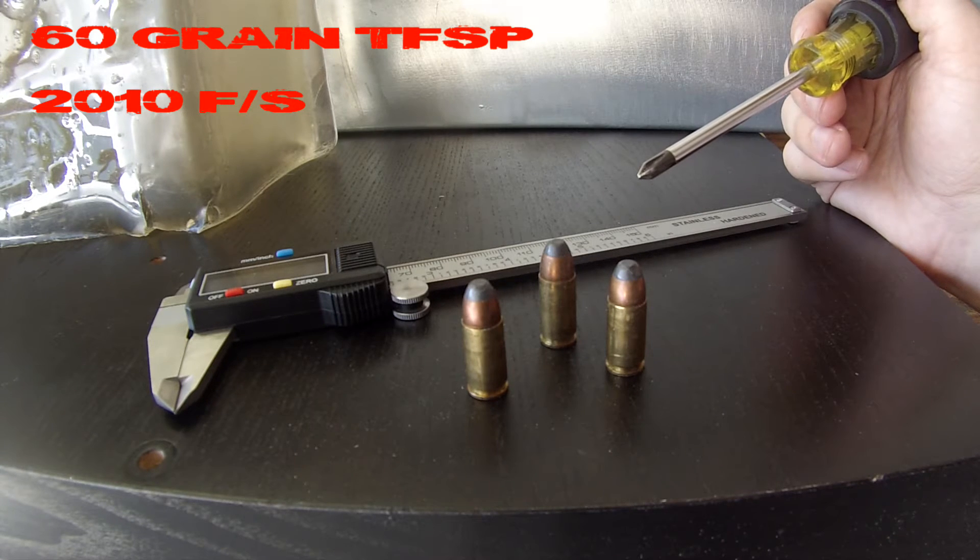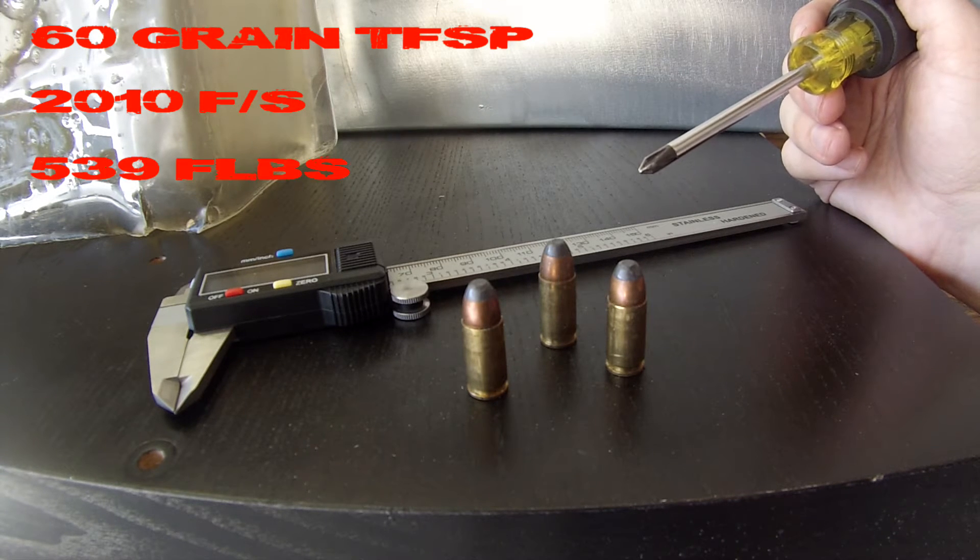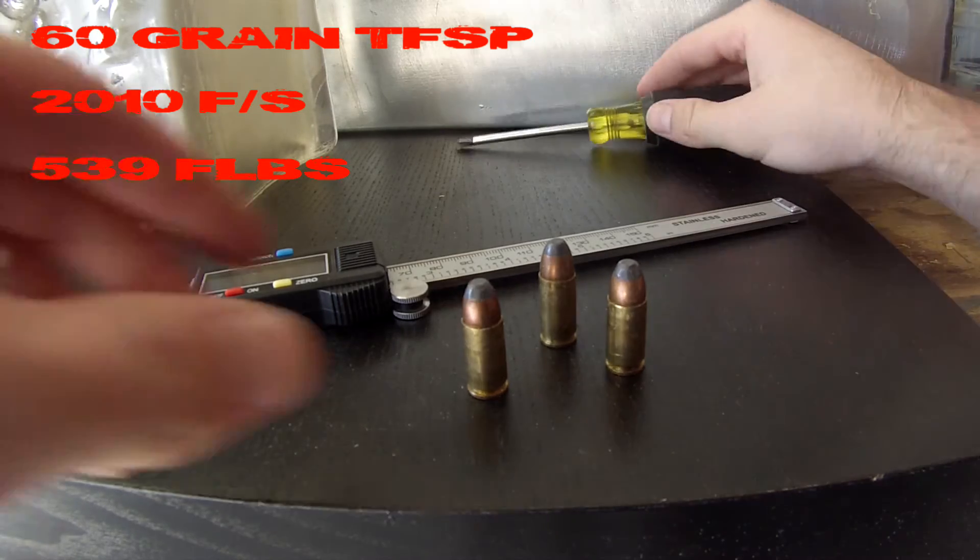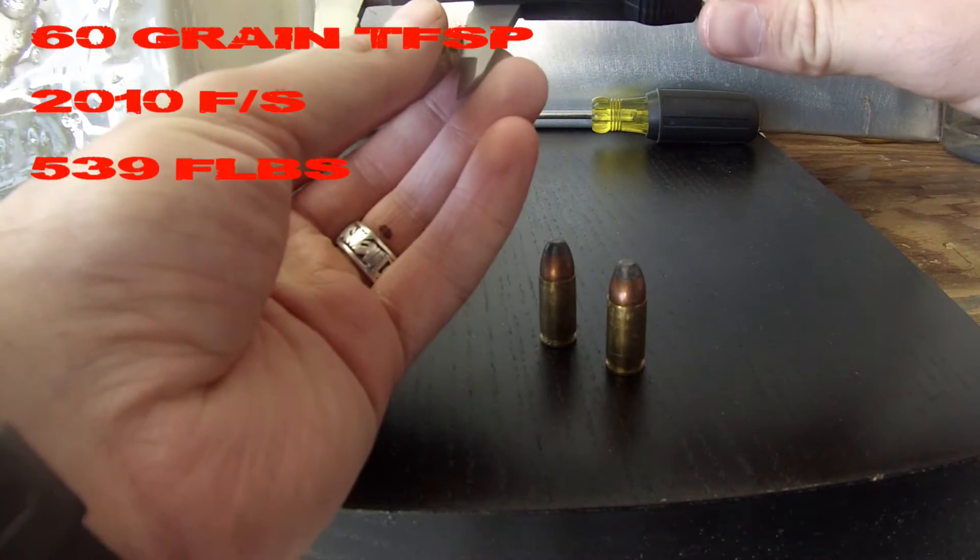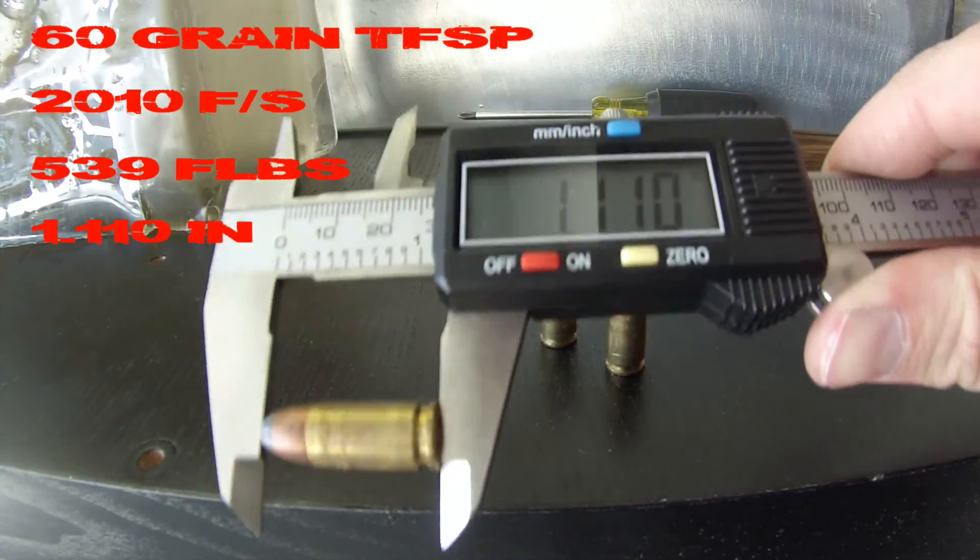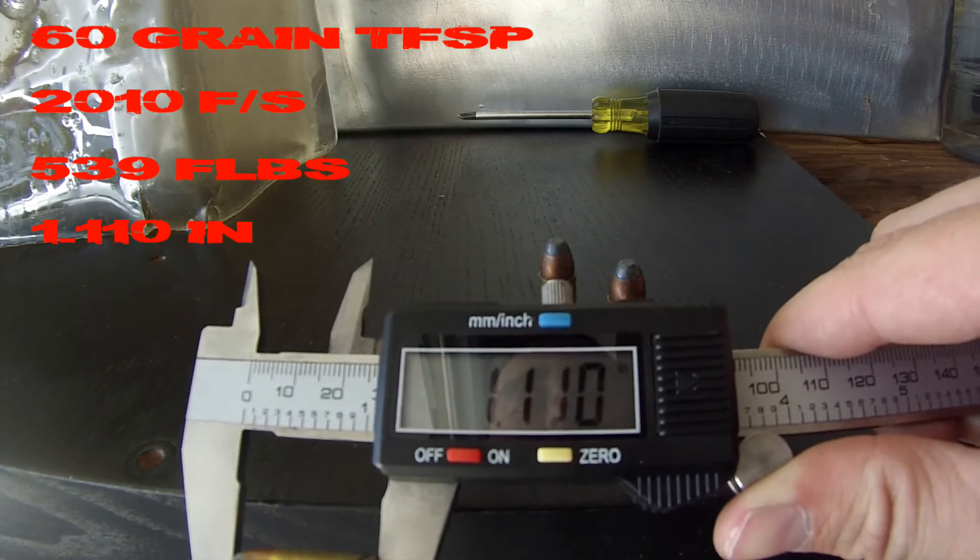This velocity also allows the round to deliver 539 ft-lbs of energy as advertised. The overall cartridge length as measured with this caliper is roughly 1.11 inches.